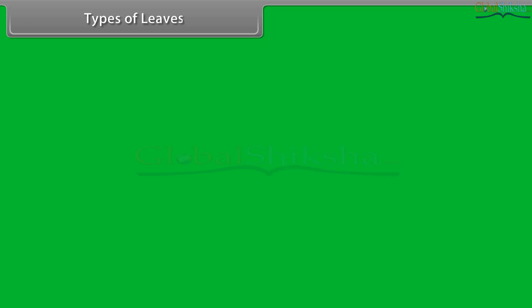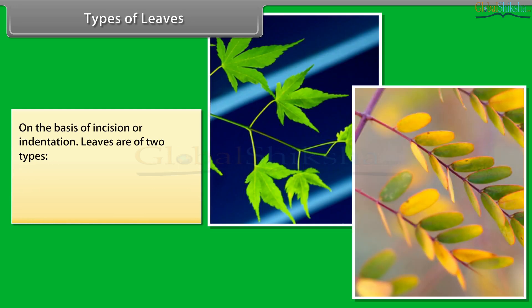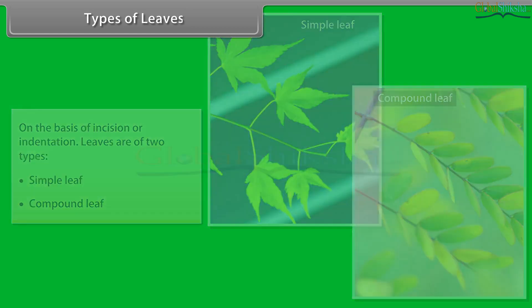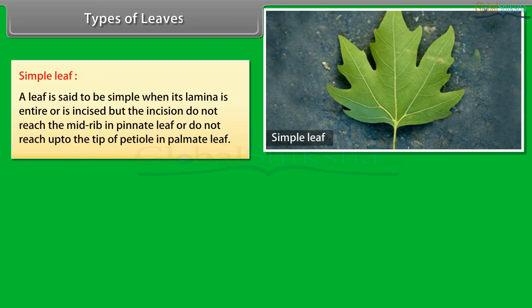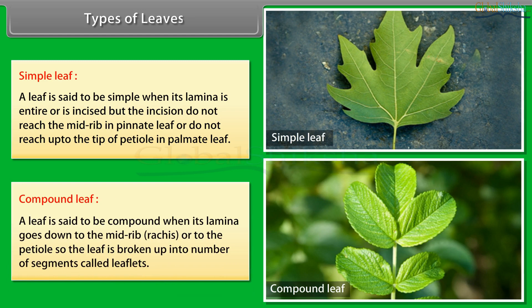On the basis of incision or indentation, leaves are of two types: simple leaf and compound leaf. A leaf is said to be simple when its lamina is entire or is incised, but the incision does not reach the midrib in a pinnate leaf or does not reach up to the tip of the petiole in a palmate leaf. A leaf is said to be compound when its lamina is cut down to the midrib, rachis, or to the petiole, so the leaf is broken up into a number of segments called leaflets.